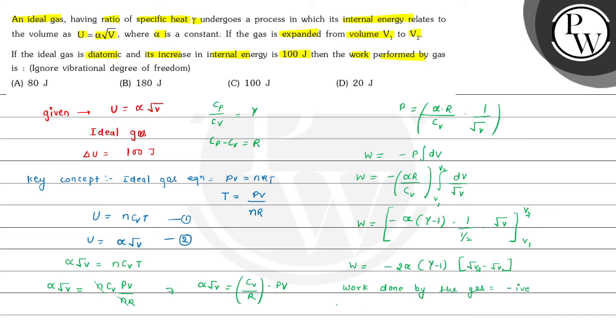The work done by the gas is: W equals 2 alpha (gamma minus 1) times (square root of V2 minus square root of V1). Now, it is a diatomic gas and the internal energy change of 100 joules is given. The question also mentions that no vibrational degree of freedom is to be added.